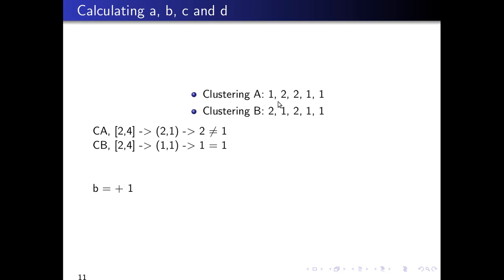Continuing with index two and four. Index (2, 4) corresponds to the pair (2, 1) in cluster A and the pair (2, 1) in cluster B. Two is not equal to one, so the pair is not equal in cluster A. But the pair in cluster B — two and one — wait, is not equal either. So B increases by one. Now index two and five. It corresponds to the pair (2, 1) in cluster A and the pair (1, 1) in cluster B. The pair in cluster A is not equal, but the pair in cluster B is equal. So B increases by one again.